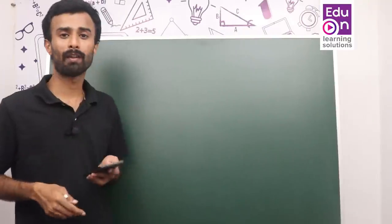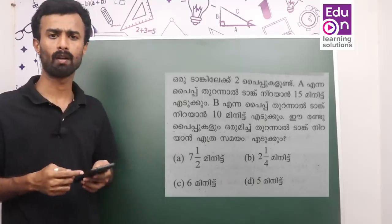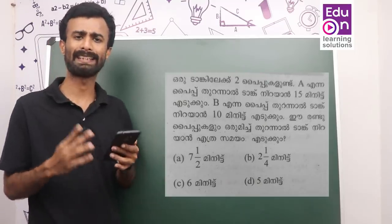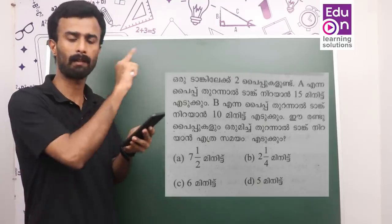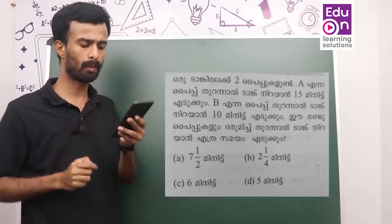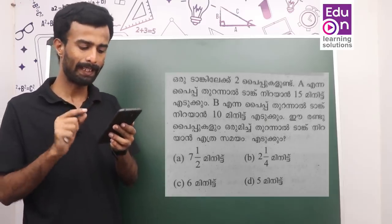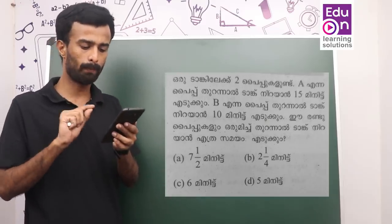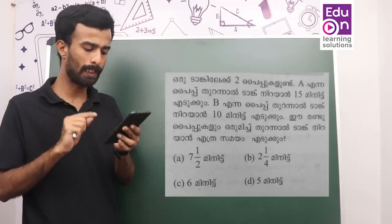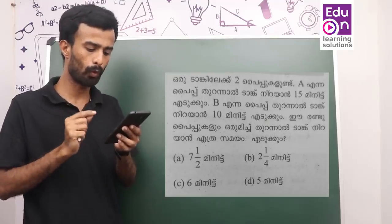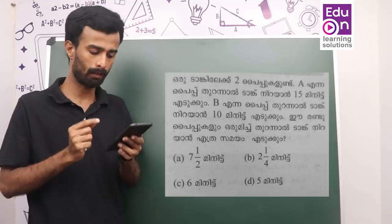The next question is about pipe and tank. If you have a pipe and tank, I have a question on the screen. I have two pipes in the tank. If you have pipe A, we have 15 minutes. If you have 10 minutes — this is 1.5 minutes.